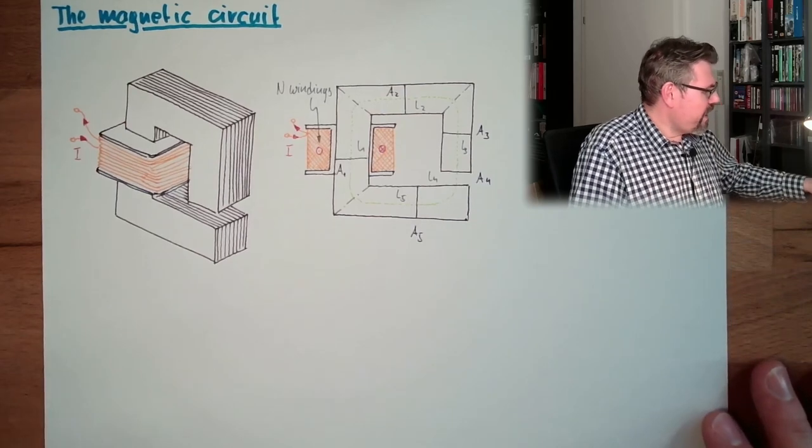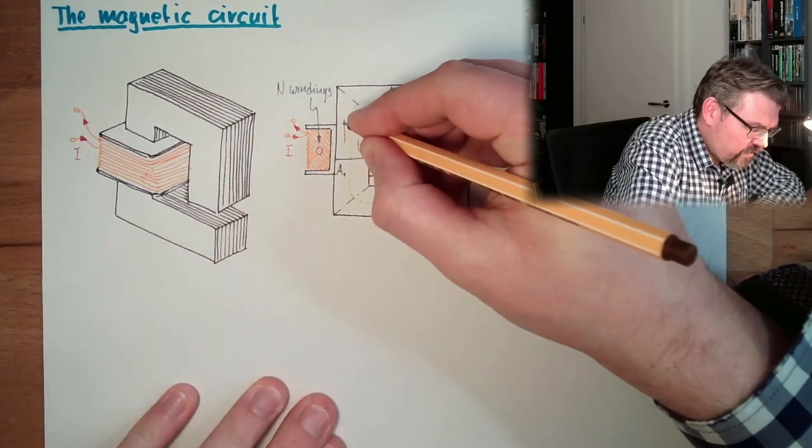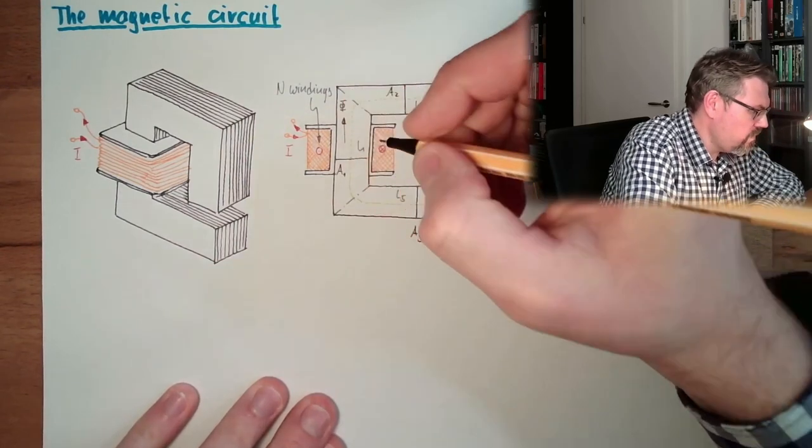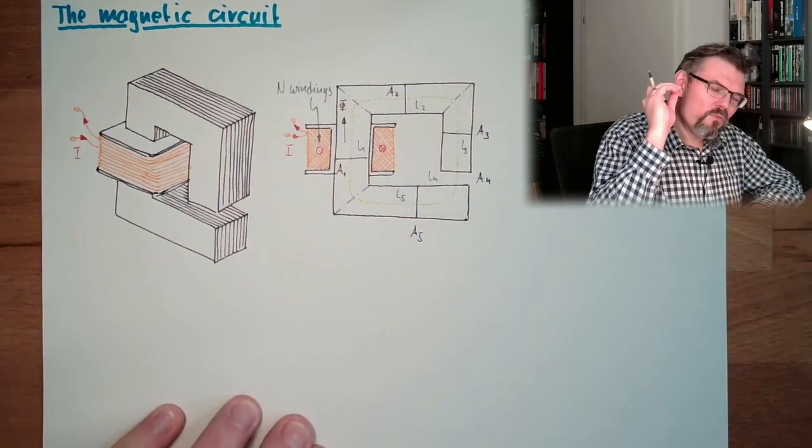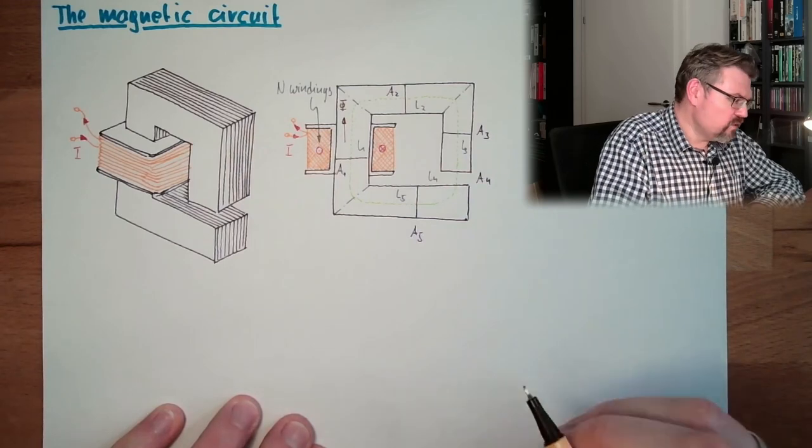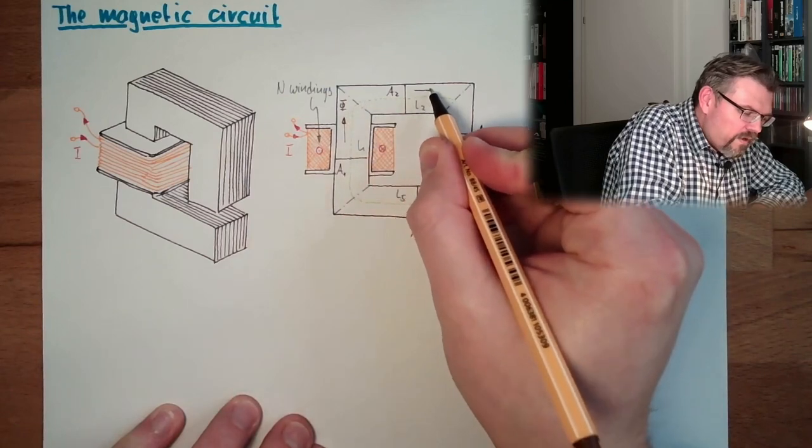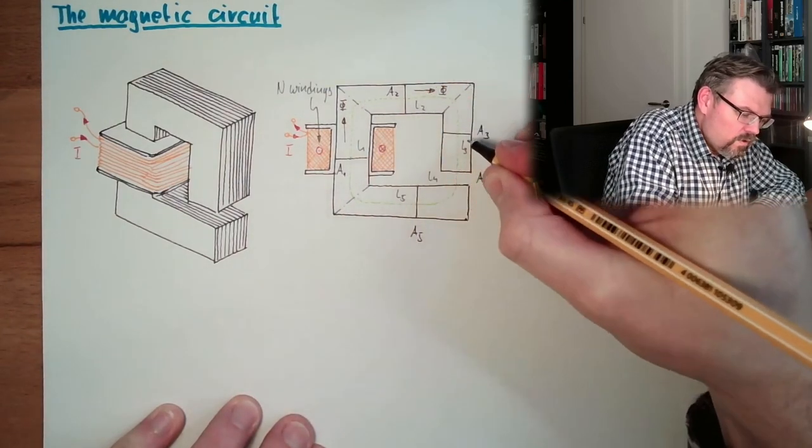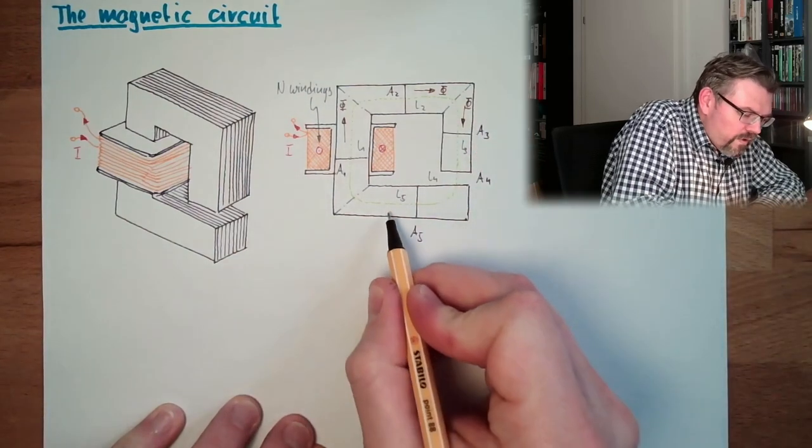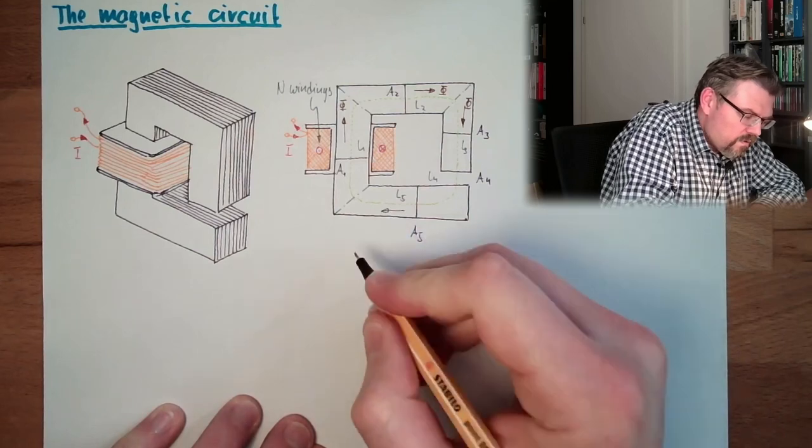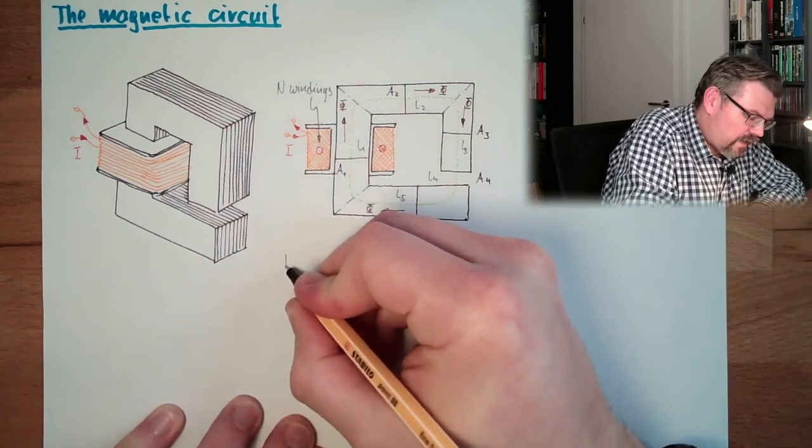And we have here our magnetic flux. So here we have a magnetic flux, phi. And we want to have a look at this without any stray fluxes. So we say the flux which is going here will also go here, will also go here, will also go here.